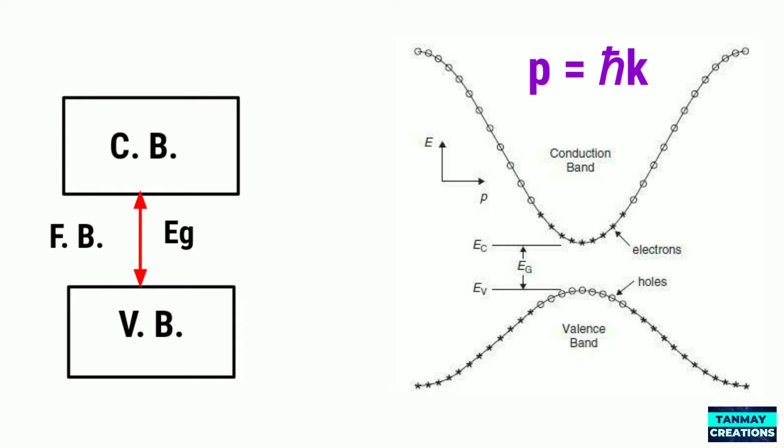The band gap EG is the difference in energy between the top of the valence band and the bottom of the conduction band.